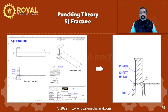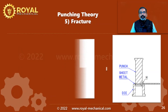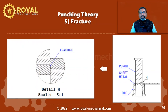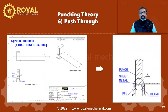The next stage is the fracture stage. Let's take a closer look at detail view H. As the punch descends further, the cracks that were initiated in the penetration phase meet, and the fracture of the raw material happens. With this fracture, the shearing of the raw material is completed.